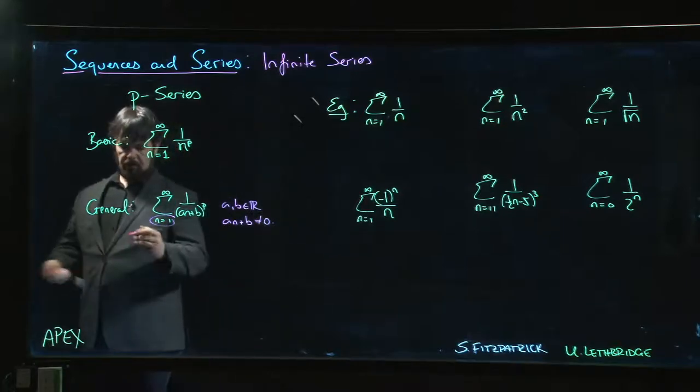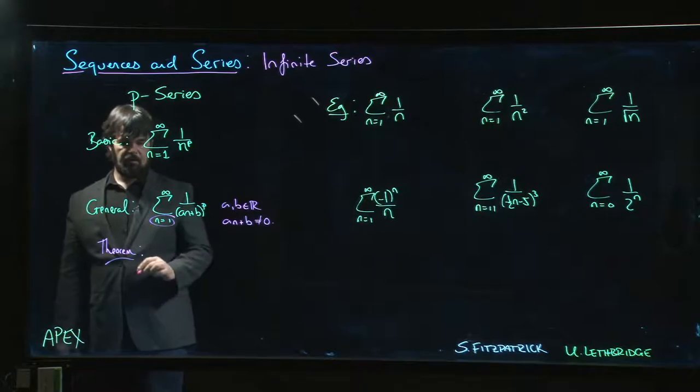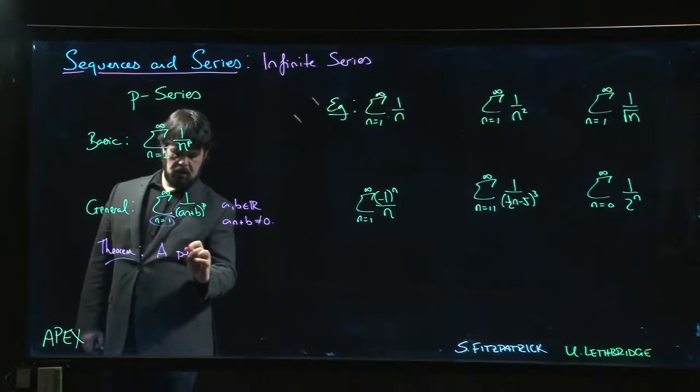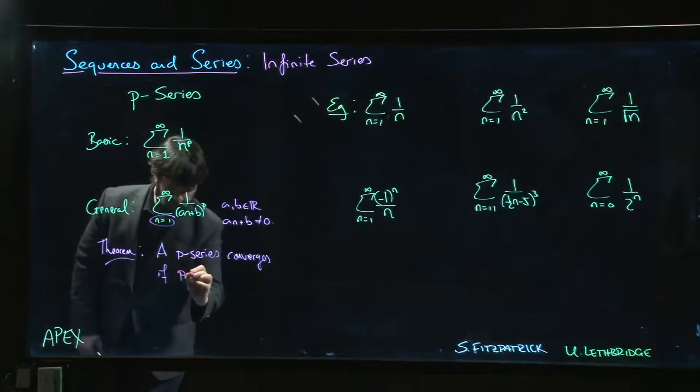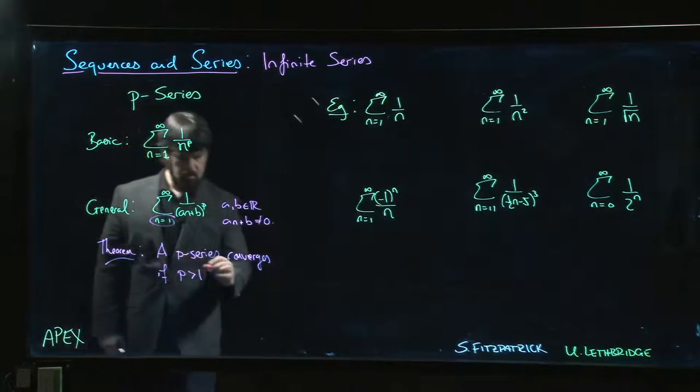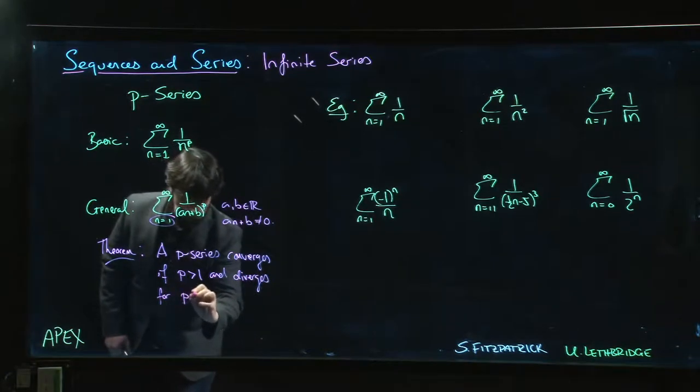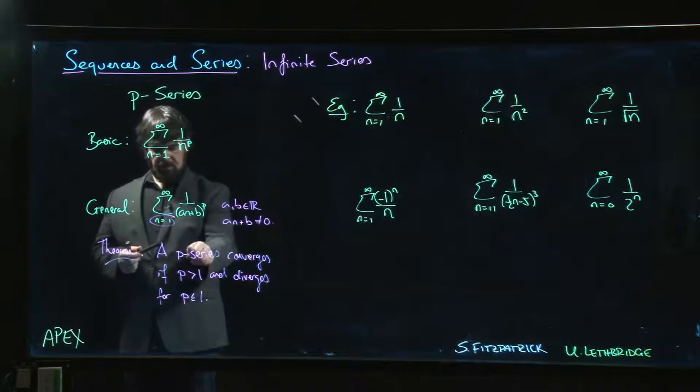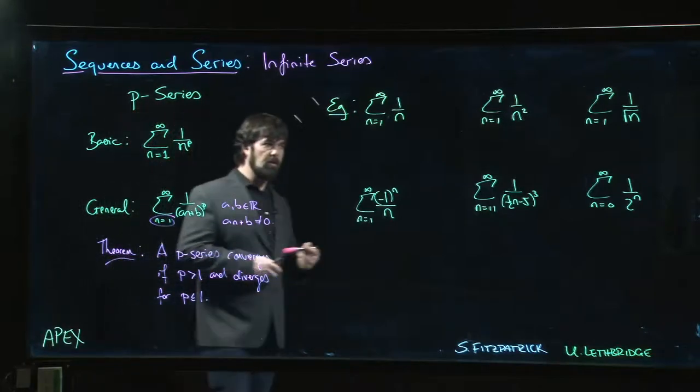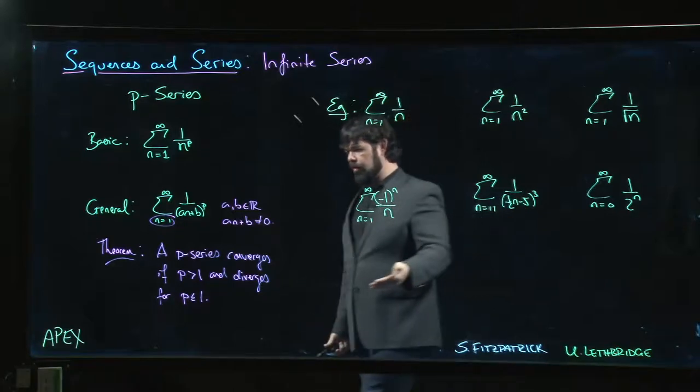The main result about p-series is the following theorem, which states that a p-series converges if p is strictly greater than 1, and it diverges otherwise. So it diverges for p less than or equal to 1. Now, this p-series test tells us whether or not the series converges. It doesn't say anything about what that series converges to. This is strictly a test for convergence. We are not trying to calculate a value for the series.